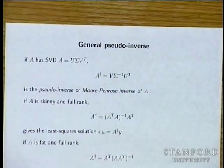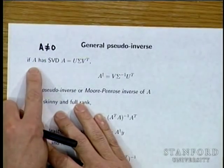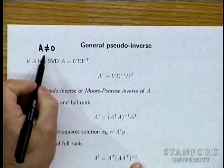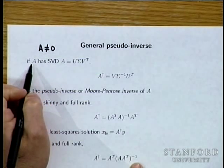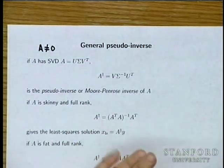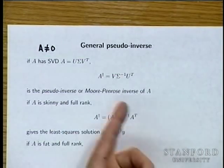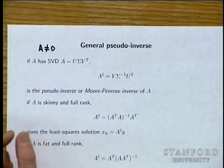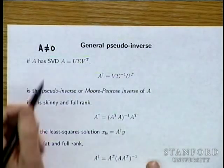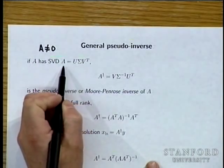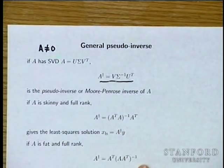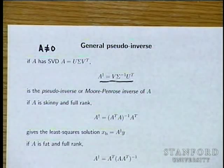The SVD gives us the full story on the pseudo-inverse. For any non-zero matrix A with SVD A = U Σ V^T, the Moore–Penrose inverse is A† = V Σ⁻¹ U^T. You can check this agrees exactly with the two formulas for the pseudo-inverse you've seen so far — one for skinny full-rank A and one for fat full-rank A.